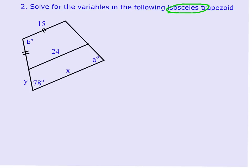In this example, it's important to notice that this is an isosceles trapezoid. So if I want to find angle A, because it's isosceles, I know that the base angles are congruent. So A has to equal 78 degrees.